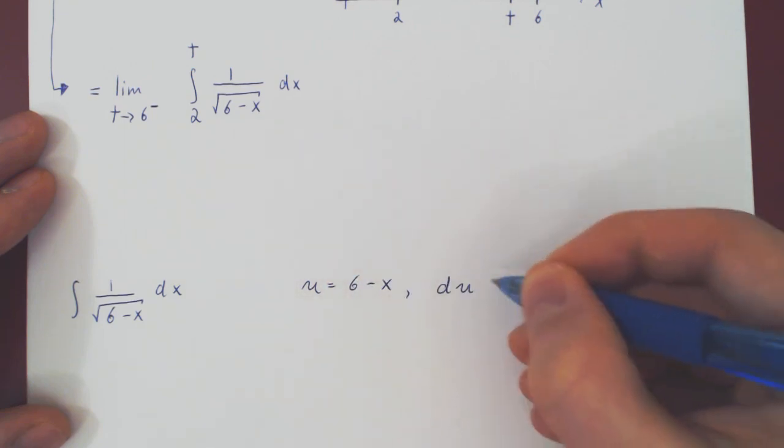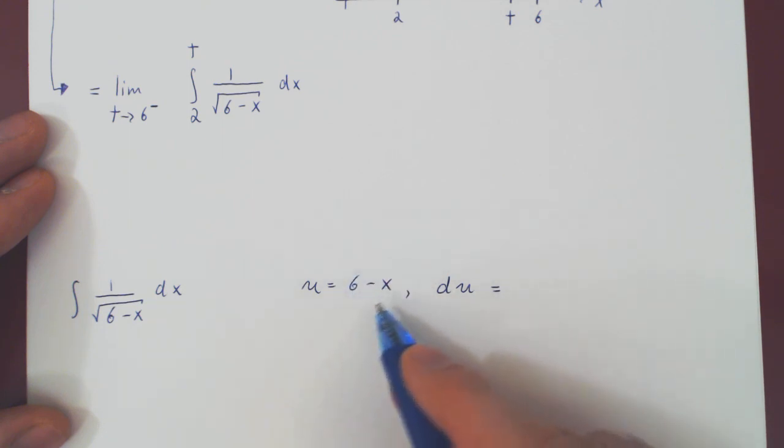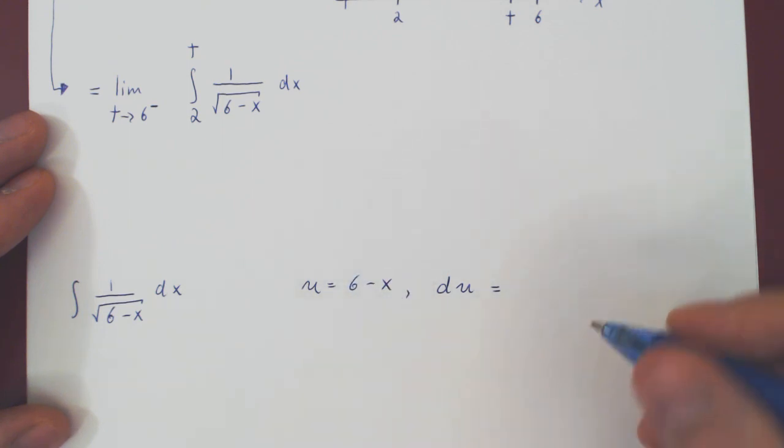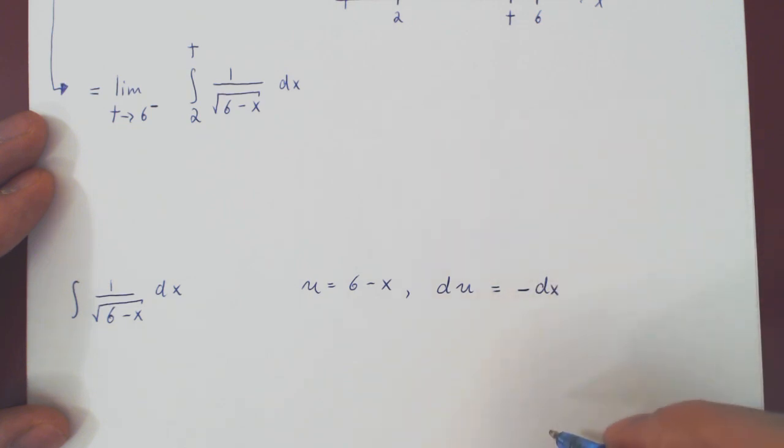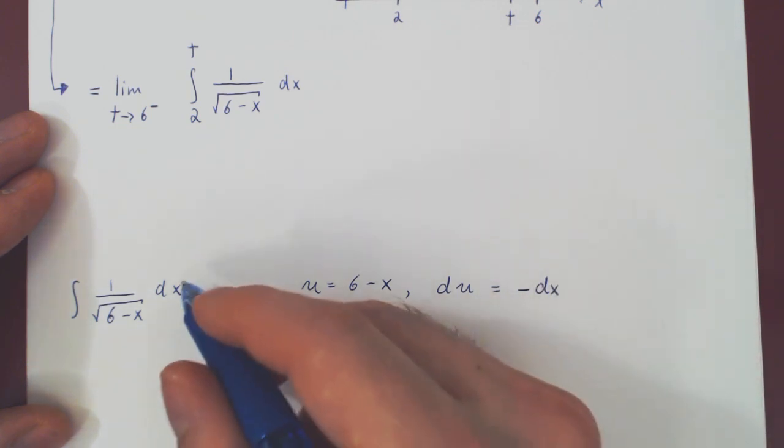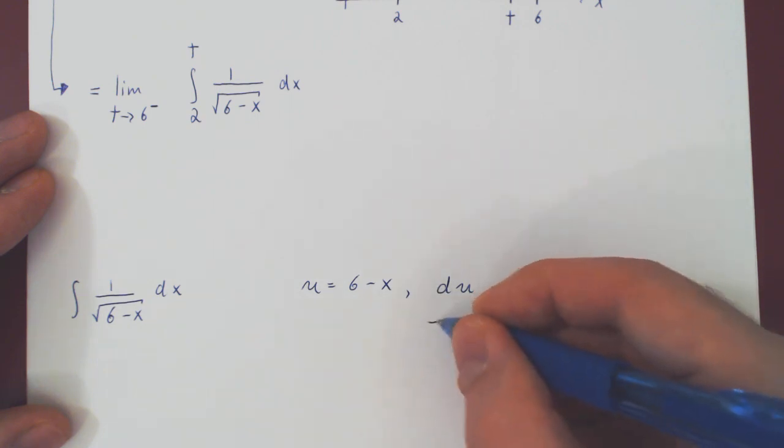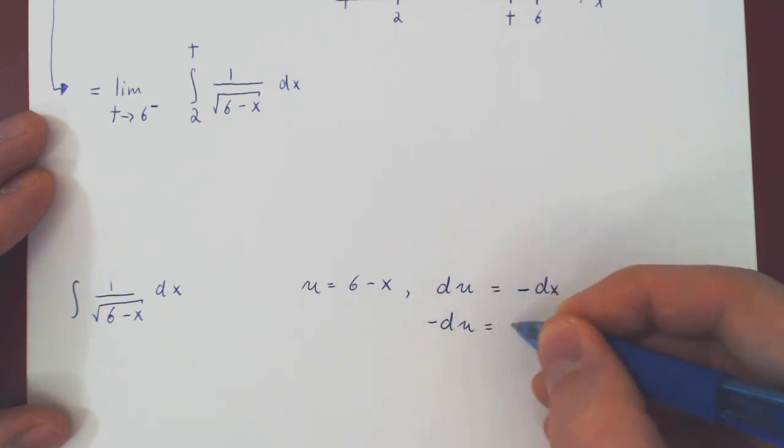Then the differential of u, du, is the differential of 6 minus x, the derivative of which is negative 1, and so we get negative dx. If you prefer, you get both sides, and so negative du is dx.